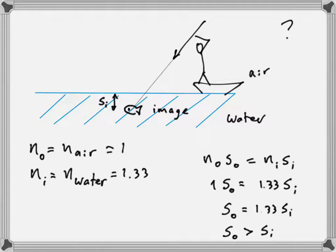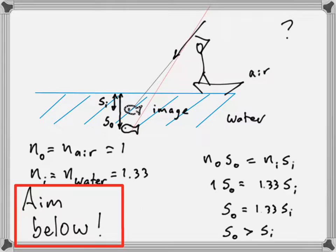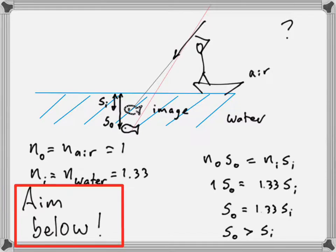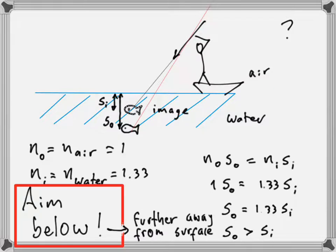The actual fish is at a greater distance from the surface than s_i, so the fish is actually underneath its image. The fisherman thinks the fish is at the image location, but for a successful spear throw, the spear must be pointed below the image location. If you think the fish is at a certain depth, you have to aim below that depth to catch it.